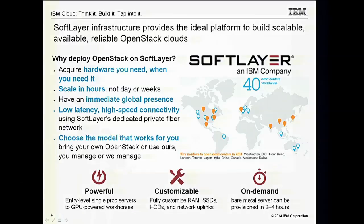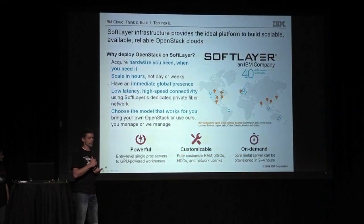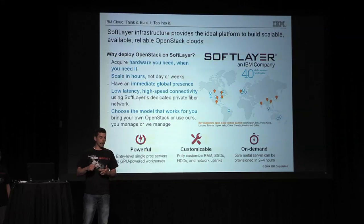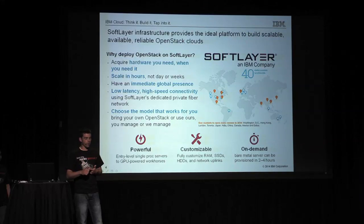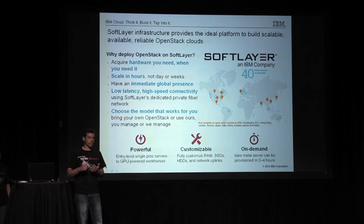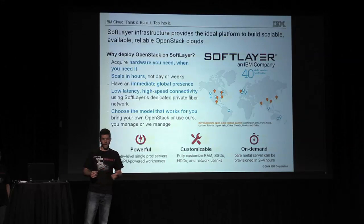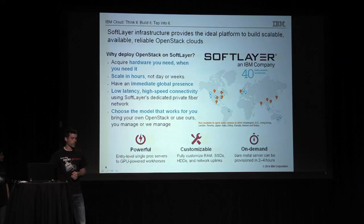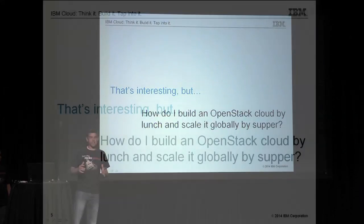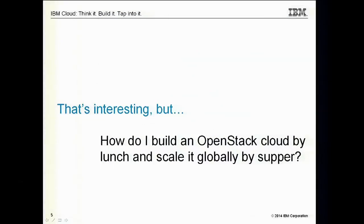From a hardware perspective, SoftLayer has options ranging from entry level single procs all the way up to GPUs and quad processors, with fully customizable RAM, hard drives, SSDs, and network — 1 gig or 10 gig. On-demand bare metal servers are available in two to four hours. So how do I actually get an OpenStack cloud, build it, and scale it globally?